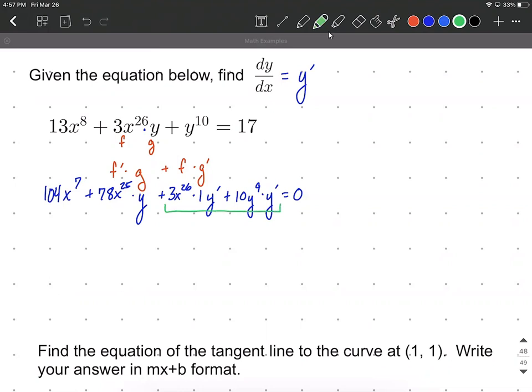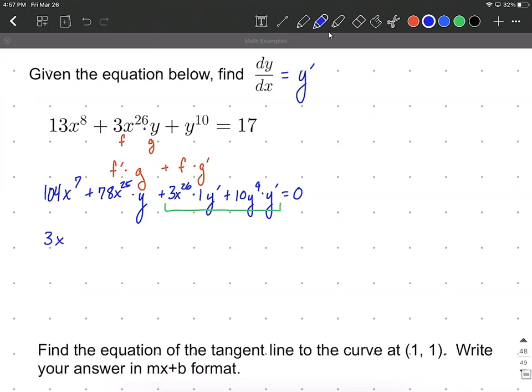So I'm going to keep those two terms on the left-hand side, and I'm going to move the other terms that don't have y primes over to the right-hand side. So what we're going to have to do in that case is keep the 3x to the 26th power times y prime, leaving out the 1 plus 10y to the 9th power times y prime.